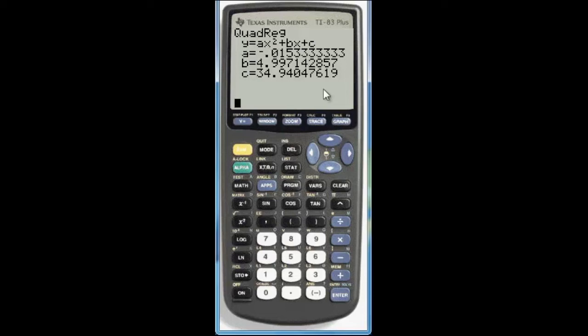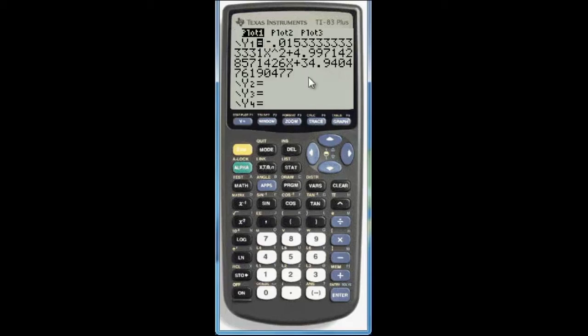Now let's move on to part b where it says to graph the model and compare the data with the model. Well first we want to look and make sure that it entered the equation into our graphing menu. Which it did. There's the regression. Quadratic regression model.